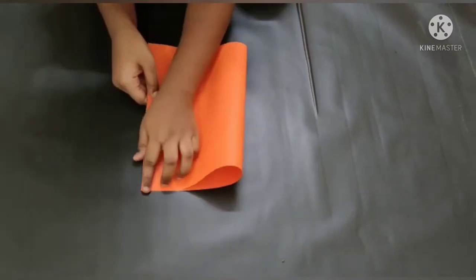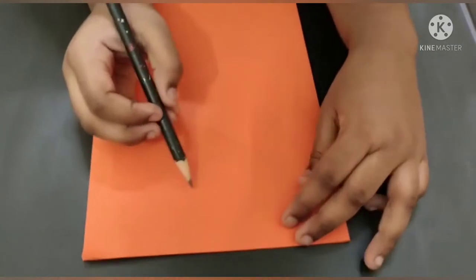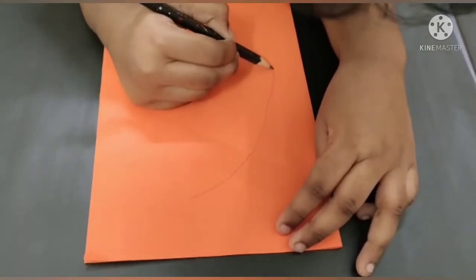Fold the colored paper in half. Draw the shape of the lung on one side.